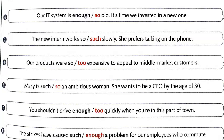Number six: 'Our IT system is so old. It's time we invested in a new one.' Number seven: 'The new intern works so slowly, she prefers talking on the phone.' Number eight: 'Our products were too expensive to appeal to middle market customers.' Number nine: 'Mary is such an ambitious woman. She wants to be a CEO by the age of 30.'